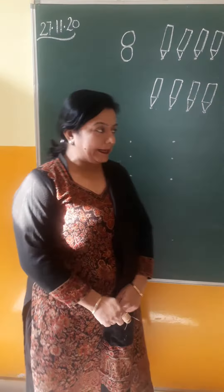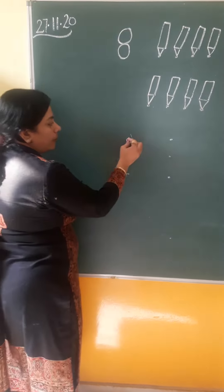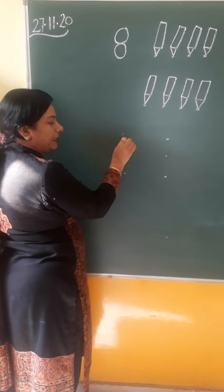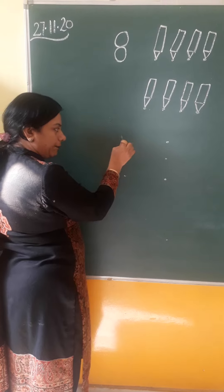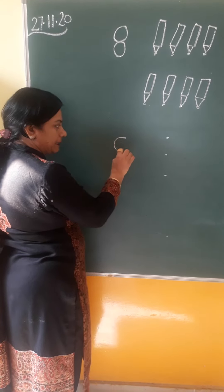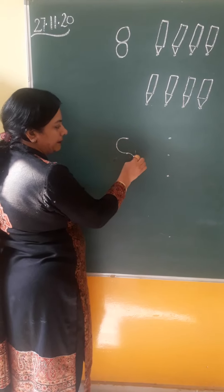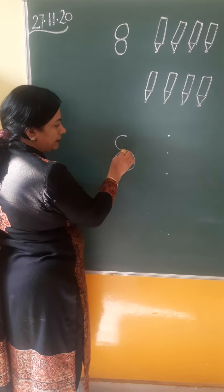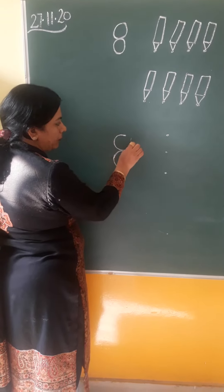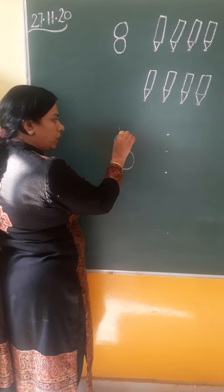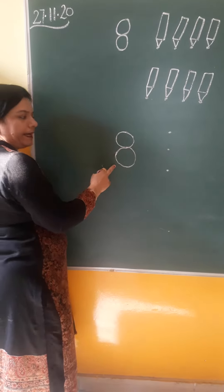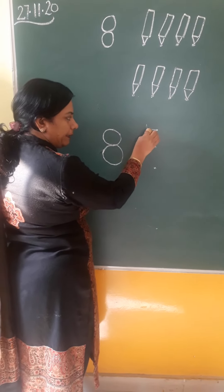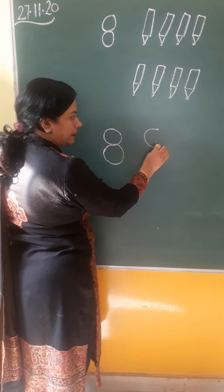Now, how to make it? This is a dot. Put the pencil on this dot and make a semicircle, then another semicircle. Round, round, round, touch the dot. And round, round, round, touch the dot. This is it.